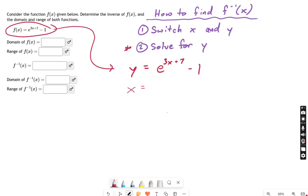So what I'm going to do now is switch x and y. x equals e to the 3y plus 7 minus 1.